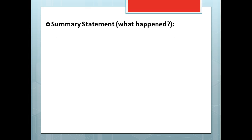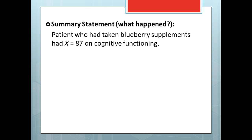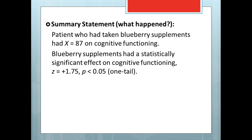Now let's report the results of this one-tailed hypothesis test. The summary statement will use the same format as before. The first sentence will be: Patient who had taken blueberry supplements had X equals 87 on cognitive functioning. The second sentence would be: Blueberry supplements had a statistically significant effect on cognitive functioning, Z equals plus 1.75, P is less than 0.05 (one tail). Since we used a one-tailed hypothesis test, we must indicate that in the second sentence.